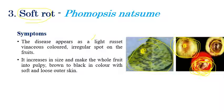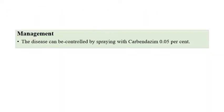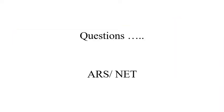Softening and rotting of the fruits is the major characteristic symptom of soft rot, and loose skin can also be observed. This disease can be efficiently managed by spraying carbendazim at 0.05 percent. For exam purposes, the causal organisms are the most important points to remember for these three diseases of ber.